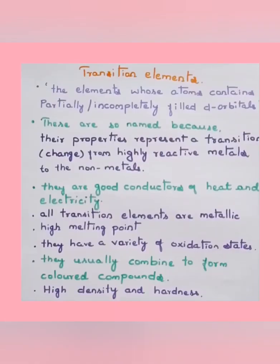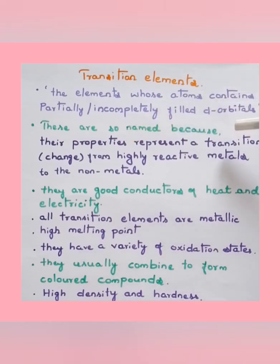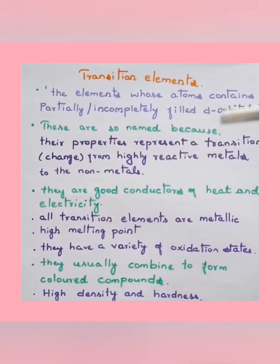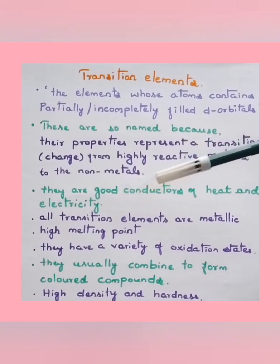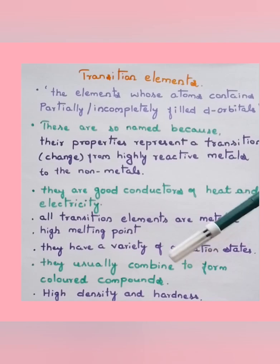Transition elements are elements whose atoms contain partially or incompletely filled d-orbitals. In the periodic table, these d-block elements are present between the s and p blocks. They are named transition elements because their properties represent a transition from highly reactive metals to non-metals. In general, transition elements are good conductors of heat and electricity, all are metallic, have high melting points, a variety of oxidation states, form colored compounds, and are highly dense and hard.